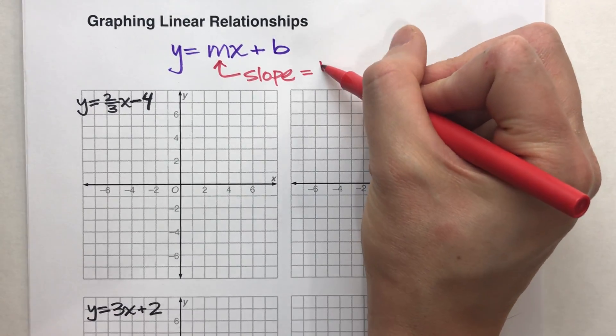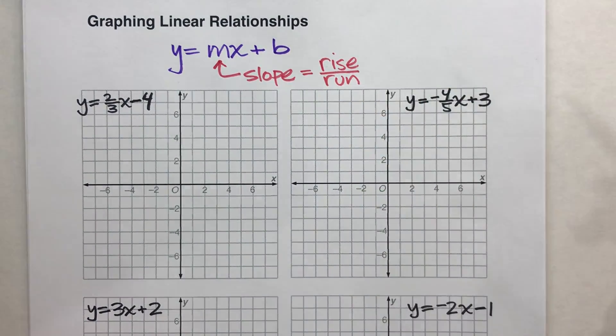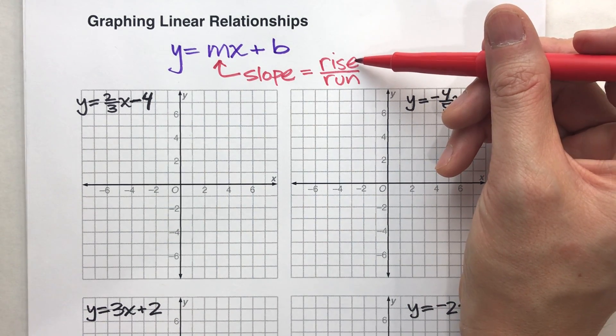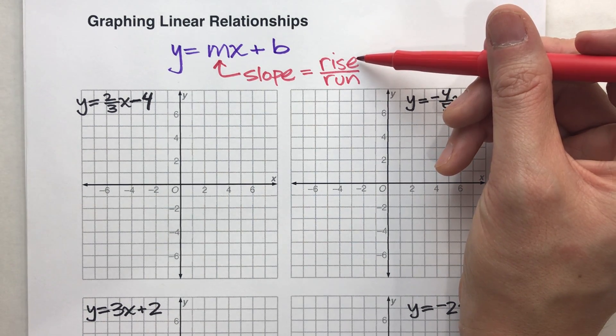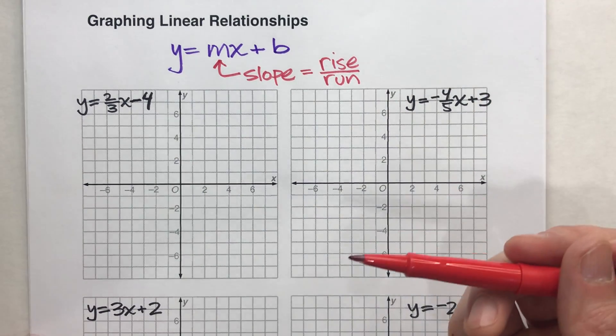And your slope can be calculated by thinking of rise over run. In other words, the number on top tells you how much up you have to go between points, and the number on the bottom, the run, tells you how much to the right you go between points.